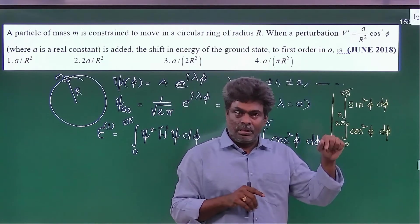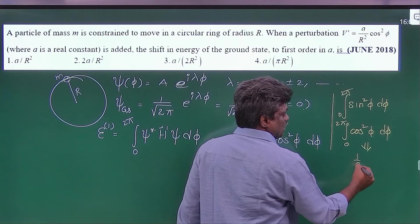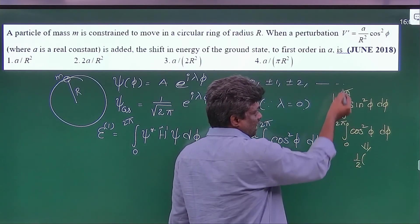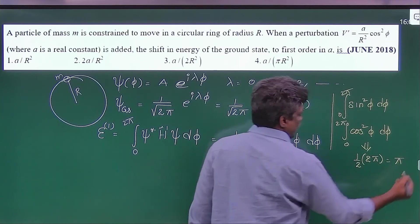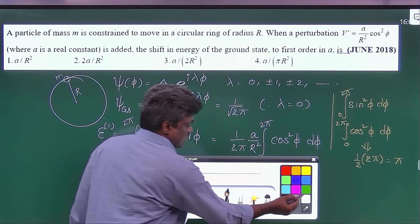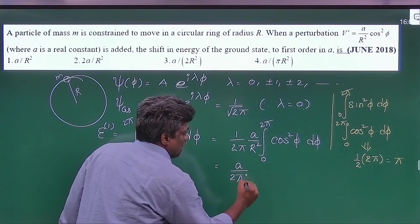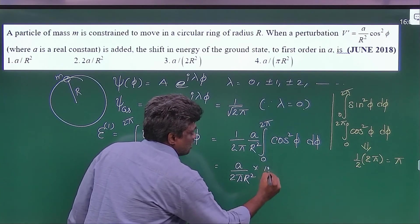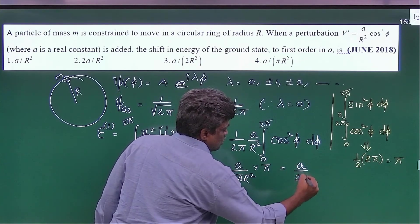Whenever you are taking the total interval, this answer is simply half into length of the interval. Here the length of the interval is 2 pi, so this is simply pi. So from that, this is a by 2 pi R square into pi, so this is the final answer: a by 2 R square.